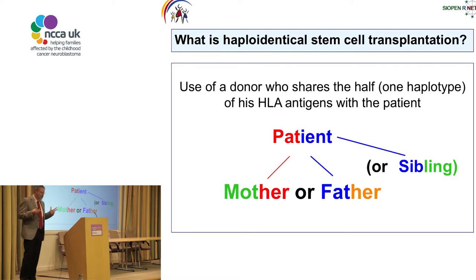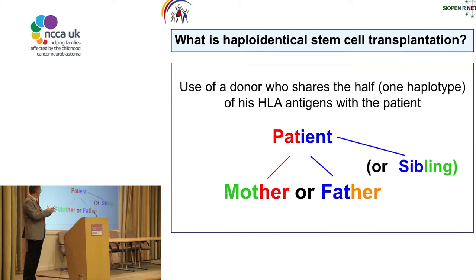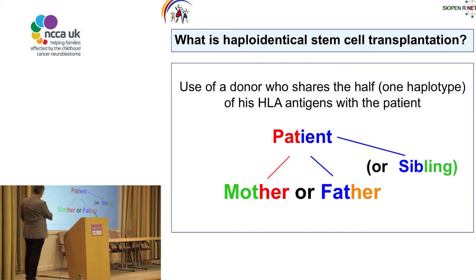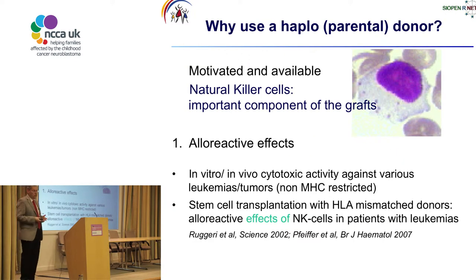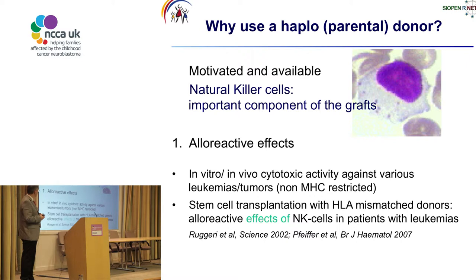What is haplo-identical stem cell transplantation? Here, we use a donor who shares at least the half — that means one haplotype of his HLA antigens with the patient — and that is normally the mother or the father, or sometimes an adult sibling. Why do we want to use a haplo-donor? Because these donors, the parents, are always motivated and available, and because natural killer cells represent an important component of those grafts.